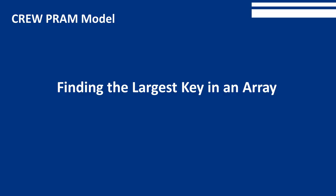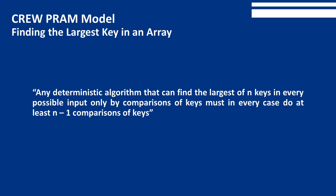Let's look into an example of the CREW model. We begin with an algorithm of the CREW PRAM model for finding the largest key in an array. Any deterministic algorithm that finds the largest of n keys by comparison alone must in every case do at least n-1 comparisons, meaning any serial algorithm for this problem must be big-theta of n.